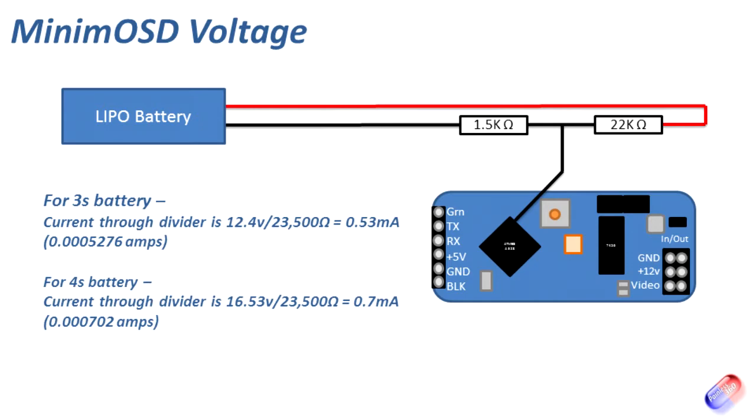First of all, let's talk about how much current this is going to draw from the battery for those of you worried about affecting flight times. Bottom line is it isn't going to pull very much at all. It's kind of half a milliamp, so that's 0.00052 milliamps for the 3s battery and about 0.7 of a milliamp for a 4s battery. So it's not going to affect the flight time at all really, so you don't have to worry about that.